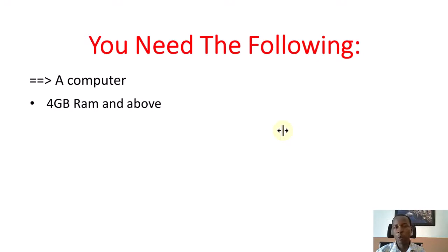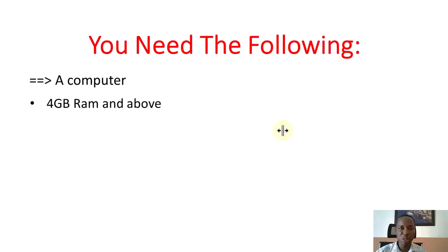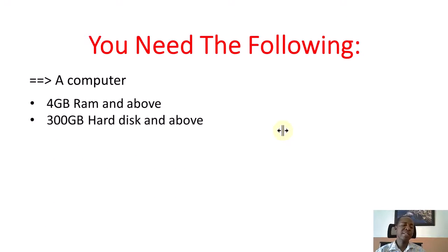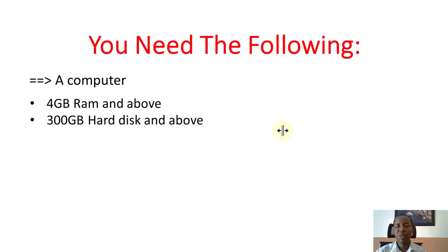The minimum computer capacity you need is 4GB RAM and above — the higher the RAM the better. If you can get 16GB RAM that is better; 8GB RAM is also good, but the minimum I recommend is 4GB. For hard disk, I recommend 300 gigabytes and above. If you can get 500 gigabytes or 1 terabyte, that is the best — the higher, the better, and the higher, the more expensive the system.